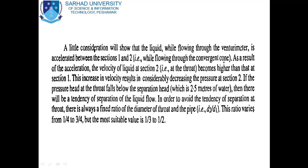When liquid flows through the Venturimeter, it is accelerated between sections 1 and 2 while flowing through the convergent cone. As a result of this acceleration, the velocity at section 2 — that is, at the throat — becomes higher than at section 1. This increase in velocity results in a considerable decrease in pressure at section 2. If the pressure head at the throat falls below the separation head of 2.5 meters of water, there will be a tendency of separation of the liquid flow. To avoid this, a fixed ratio of d2 to d1 is maintained, varying from 1/4 to 3/4, with the most suitable value being 1/3 to 1/2.